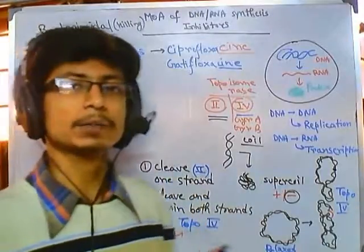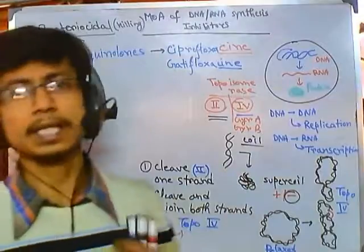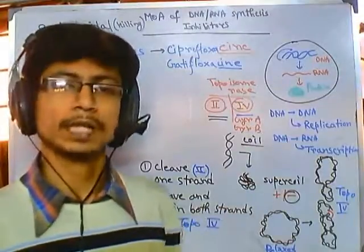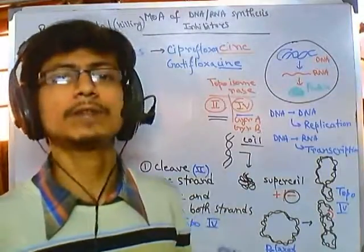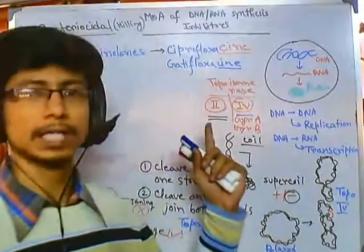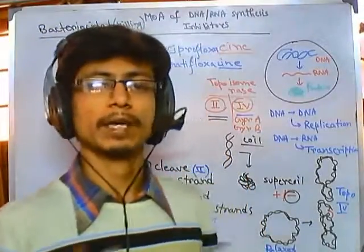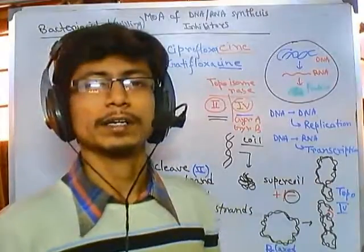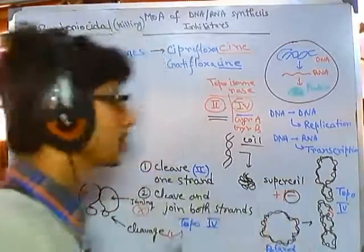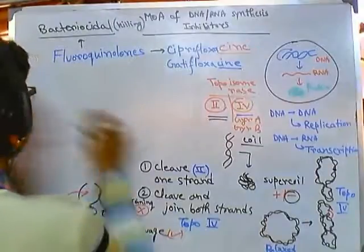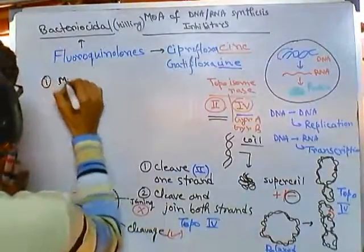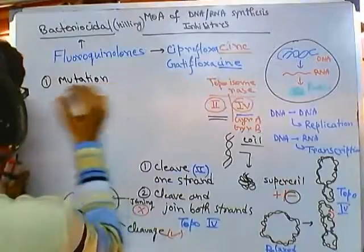Now, bacteria always try to develop some kind of resistance because they want to live, just like us. And for that reason, how will they modify their system to block this functionality? There is only one major type of resistance that we can see in bacteria, and that is due to mutation.